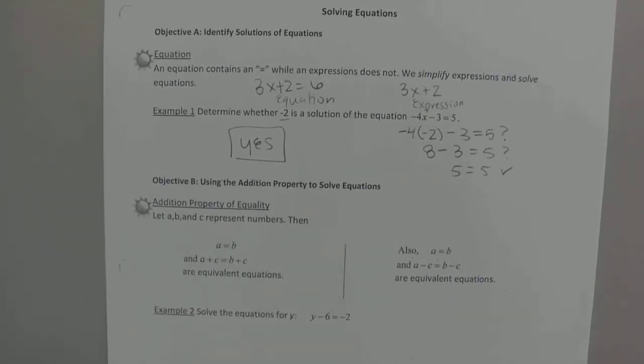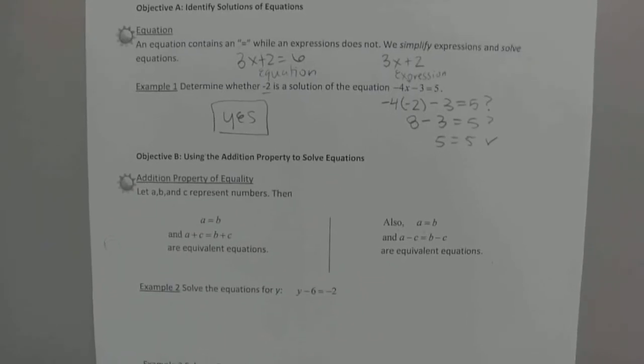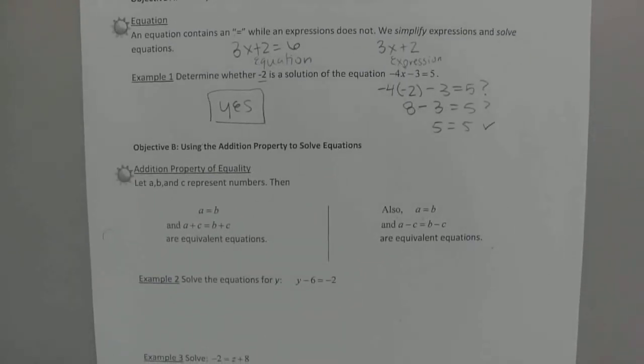So real quickly, how do we solve equations? There's two properties. Really, there's an addition and subtraction, but since they're opposites, they're kind of the same thing. The addition property just says if you have an equation and you add something to one side, as long as you add it to the right, it's still the same thing. And same thing with subtraction. If you have an equation and you subtract something from one side, as long as you do it to the left, it's the same thing.